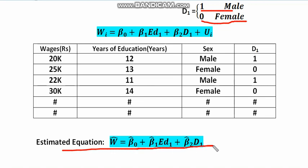Ultimately, your estimated regression equation will look like this: the estimated value of wages is a function of the estimated intercept plus the estimated parameter for education and the estimated parameter for the dummy variables.